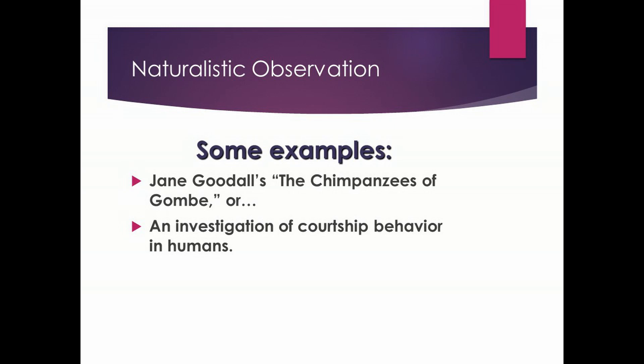Another example of naturalistic observation, this time with humans, might be an investigation of courtship behavior. In a classroom I'd normally ask where courtship takes place — where do people meet each other for potential romantic relationships in their natural habitats? Students typically say parties, bars, the quad on campus. So I could either do it with paper and pencil, observing and recording behavior in a systematic way, or I might go out there with a video camera. But again, you don't want to interfere with the natural ongoing behavior of your study participants.